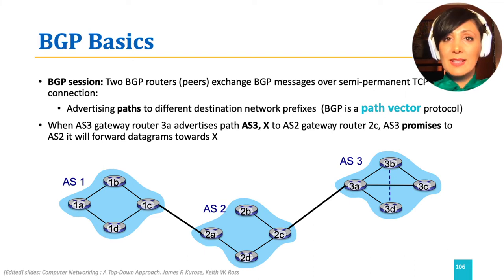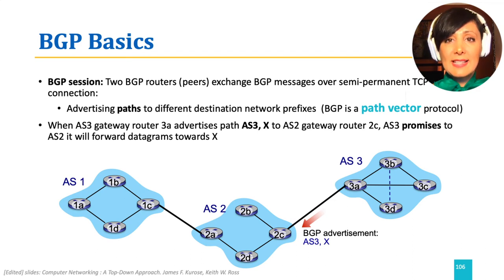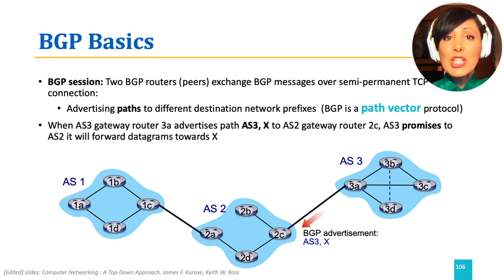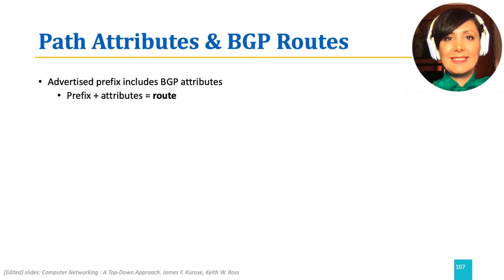For example, in this figure, AS3 gateway router 3A advertises path AS3-X to AS2 gateway router 2C. In this way, AS3 promises to AS2 it will forward datagrams towards X. This is a path vector towards X containing AS3, meaning that in order to reach X, packets from AS2 can go through AS3.